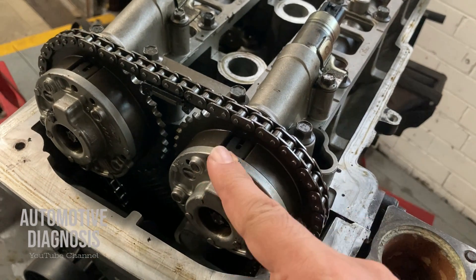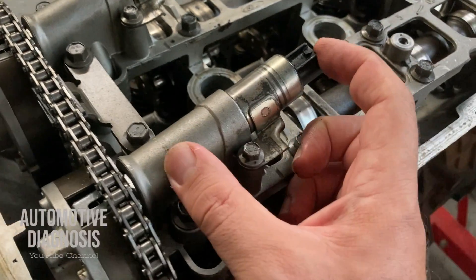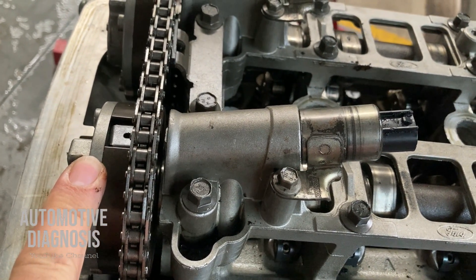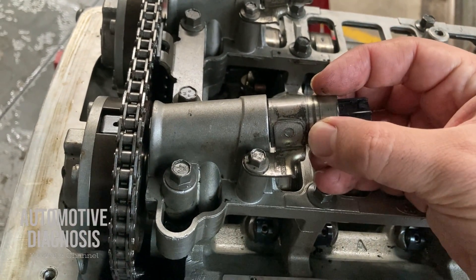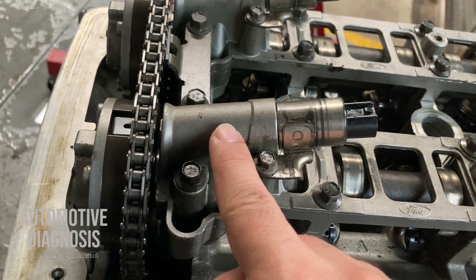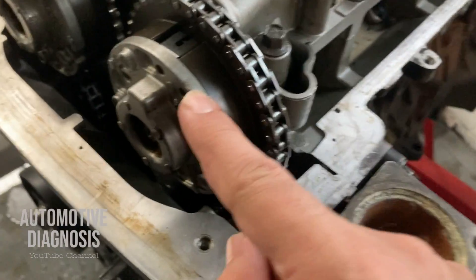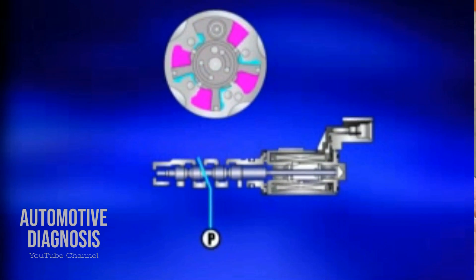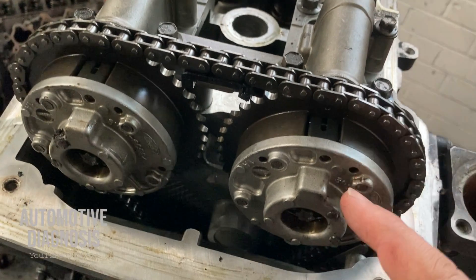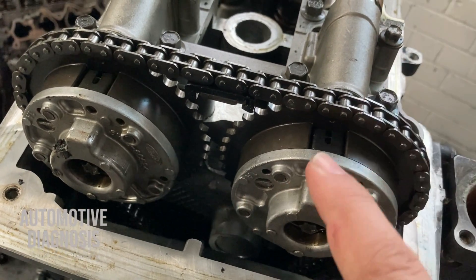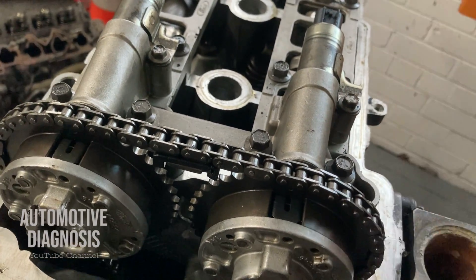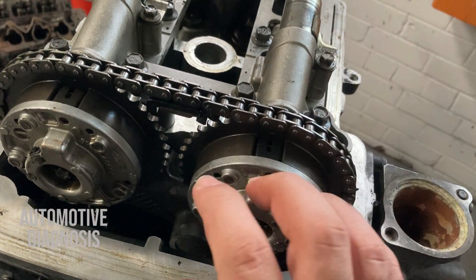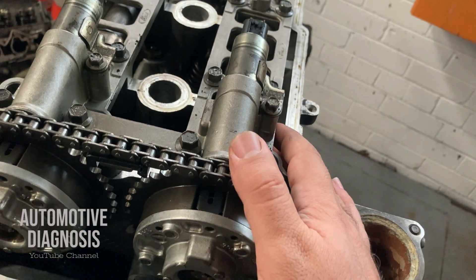This system works using engine oil. For each VVT there is a VVT solenoid valve, which provides engine oil to the VVT mechanism. Anytime the ECM wants to activate or change the valve timing, it activates the solenoid valve. Inside the VVT mechanism we have two chambers — one for advance and one for retard. When the ECM wants to advance valve timing, it adjusts the solenoid to supply oil to the advance chamber, rotating the camshaft in the direction of engine rotation. To retard, it supplies oil to the retard chamber.